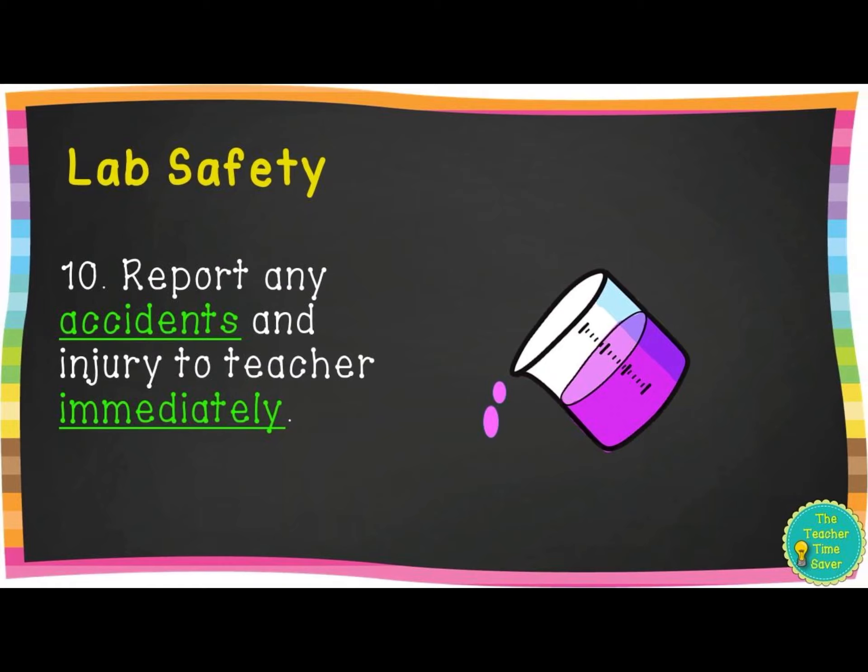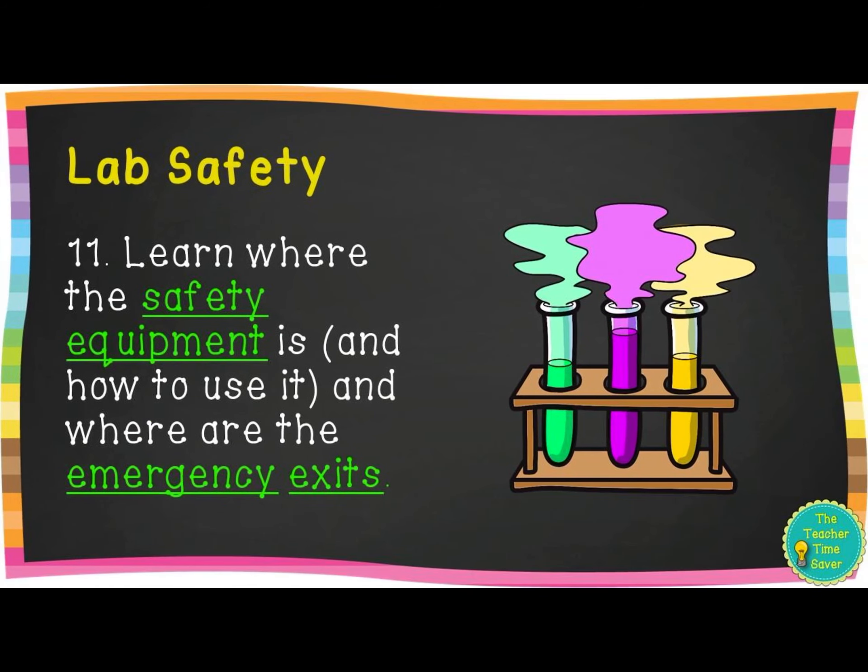Number ten: report any accidents and injuries to the teacher immediately. If you spill something or accidentally affect someone else's project, just let me know right away — it's easier to clean up if you tell me immediately. Number eleven: learn where the safety equipment is, how to use it, and where the emergency exits are. Some chemistry labs have an eye-wash station where, if you get chemicals in your eyes, you hold your eyelids open and it sprays water into your eyes for around 20 minutes. Now is a good time to learn these things while we're doing something a little less scary.